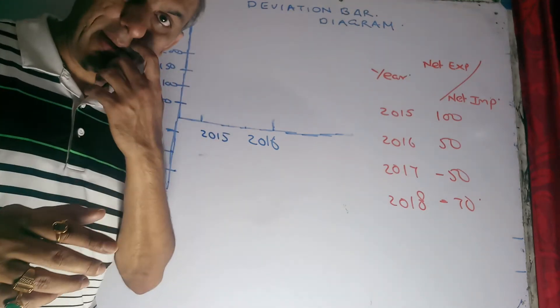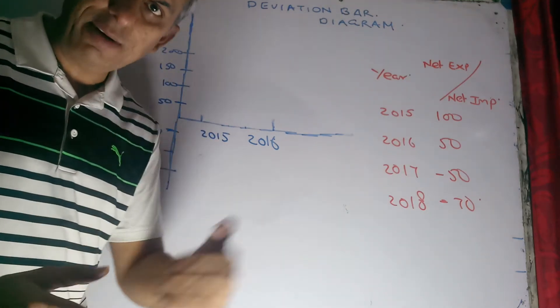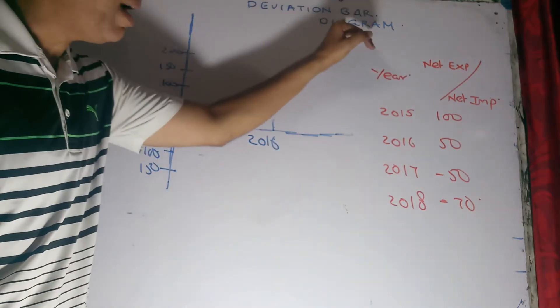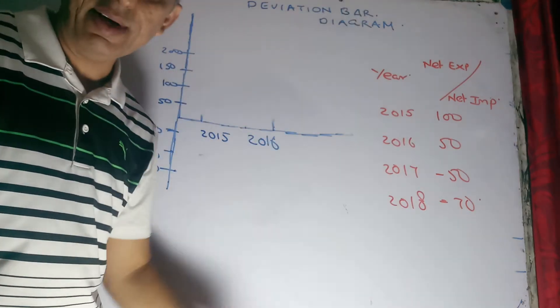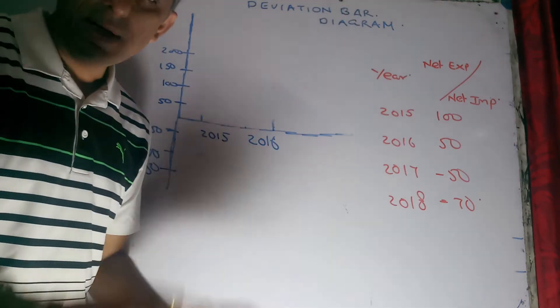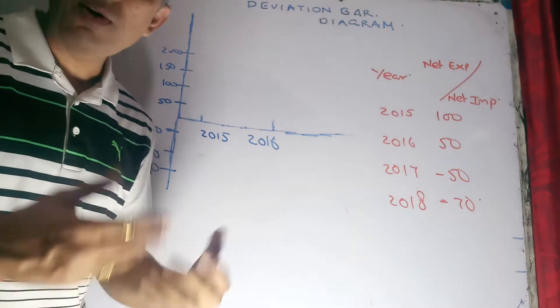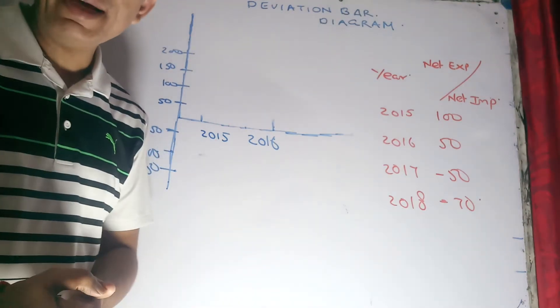One of them which we have to cover is the deviation bar diagram. What is a deviation bar diagram?